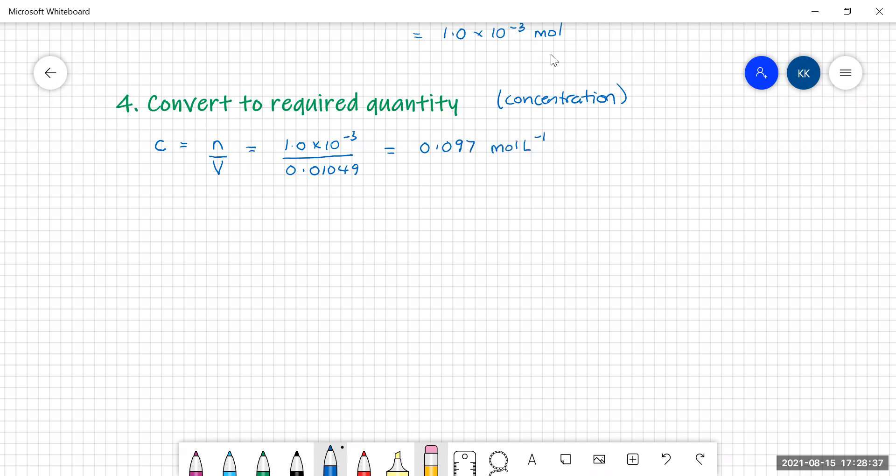So there you have it. That is how you use your standard solution of sodium carbonate to determine the concentration of an unknown hydrochloric acid solution. That's all for today. I will see you in the next video.